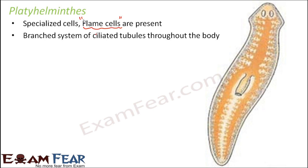Flame cells form a branched system of ciliated tubules throughout the body. You can see tubule-like structures which are all ciliated. Cilia are small hair-like structures, and their beating helps to make fluid move along the tubular structure. Due to the presence of cilia, the fluid actually tends to move, and this fluid contains the waste materials of the body. So the flame cells regulate the contents of the interstitial fluid directly.